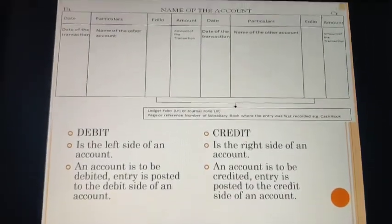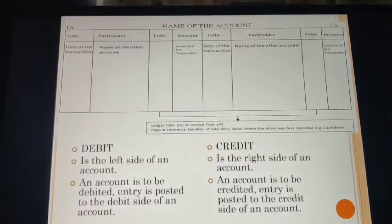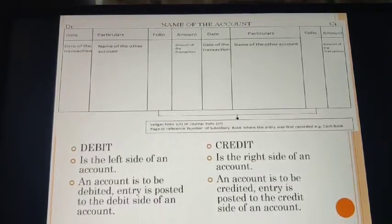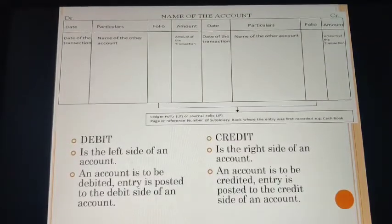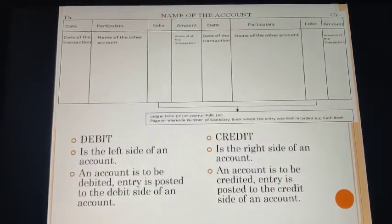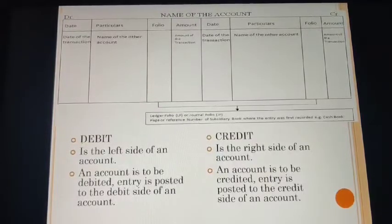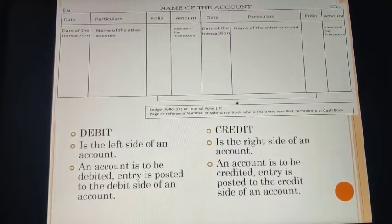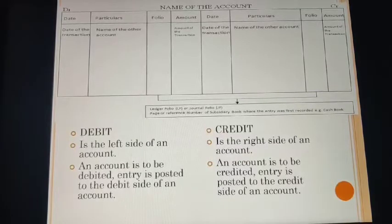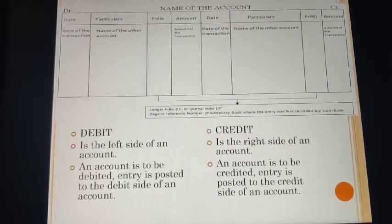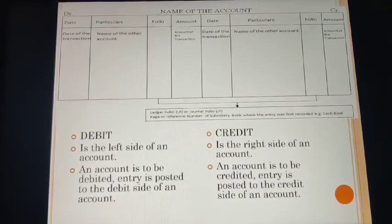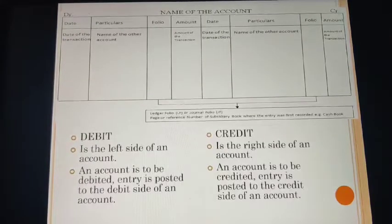Next: debit and credit — a very interesting concept on which our whole accounting depends. As discussed, accounting is based on the double entry system. Each transaction has two effects: one is debit and the other is credit. Debit is the left side of an account; an account is debited when an entry is posted to the debit side. Credit is the right side of an account; an account is credited when an entry is posted to the credit side.